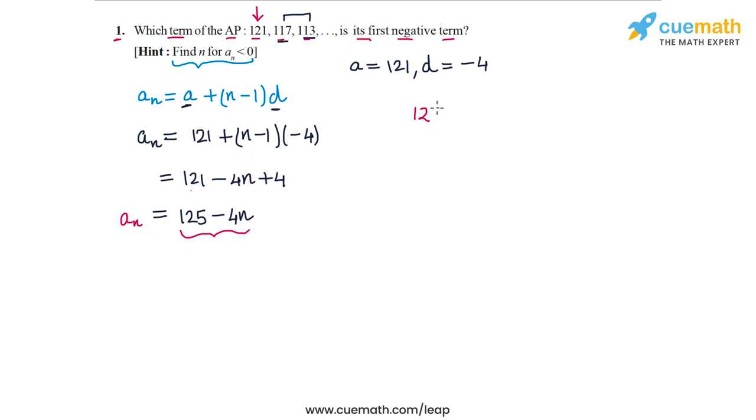So let's find that. We need 125 minus 4n should be less than 0. This means that 125 should be less than 4n. If we now divide both sides by 4, we will get 125 by 4 should be less than n. Now 125 by 4 is 31.25. So I can write this inequality as n should be greater than 31.25.